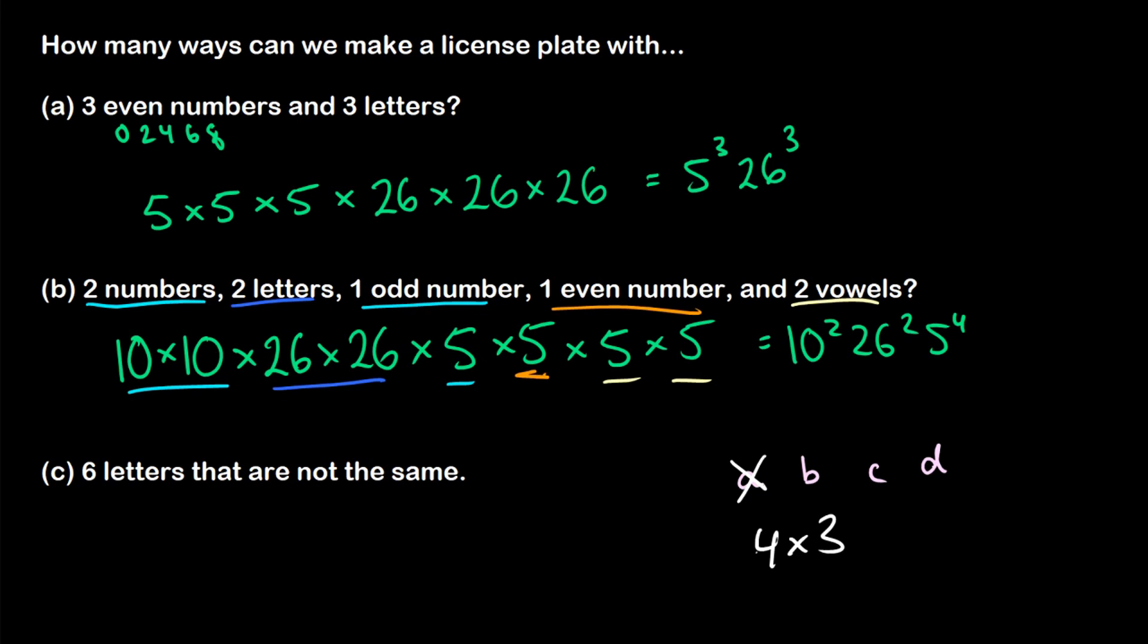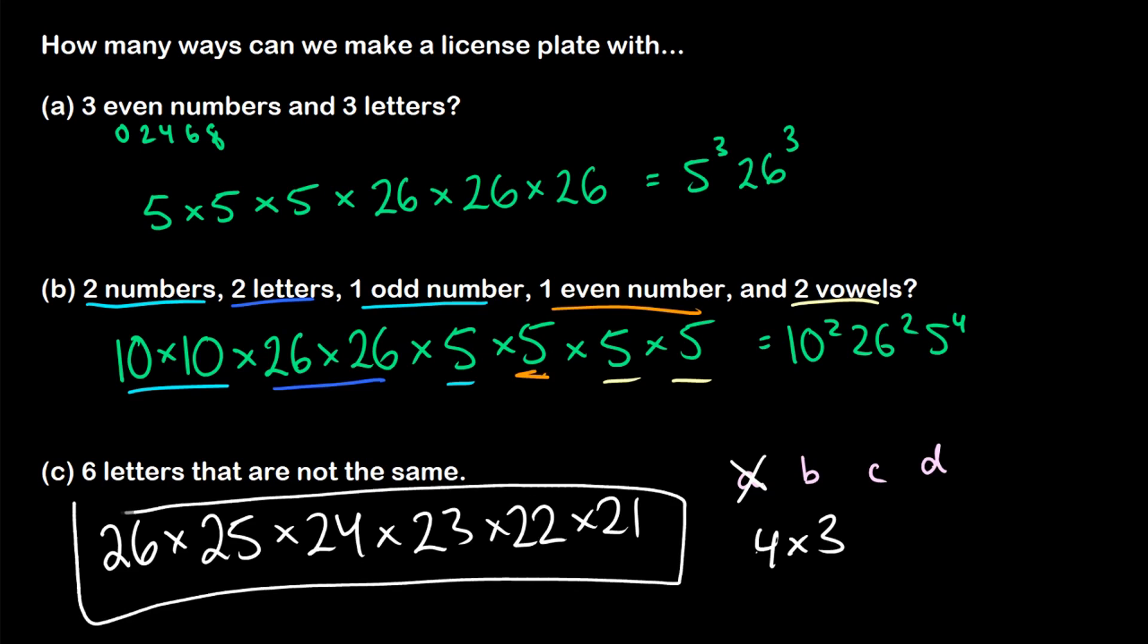So if we have six letters that are not the same, then for our first slot we have 26 choices. And whatever letter we pick, we can't reuse. So for our next slot, we have 25 choices for the second slot, 24 for the third slot, 23 for the fourth slot, 22 choices for the fifth slot, and 21 choices for the final slot. So this is how many license plates we can make where the letters are not the same.